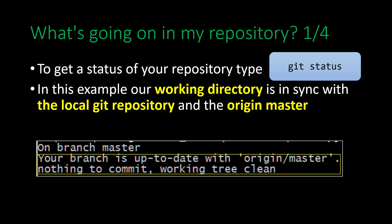We learned about three git commands: git add, git commit, and git push. You might wonder: when should I do an add, when should I do a commit, when should I do a push? There's a fourth command that helps you understand when you should do what — it's called git status. It shows what's going on in your repository. For example, in the screenshot below, our working directory is in sync with our local git repository and the origin master. It says the branch is up to date with origin master and there's nothing to commit — the working tree is clean.